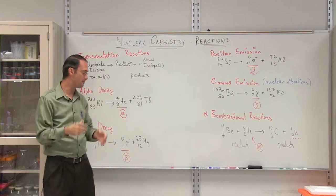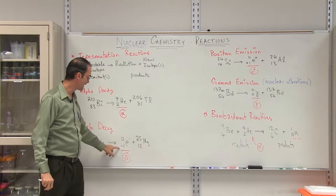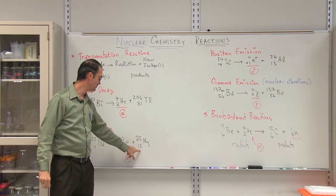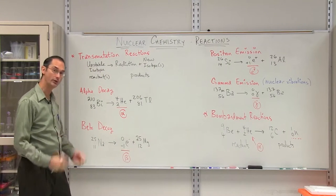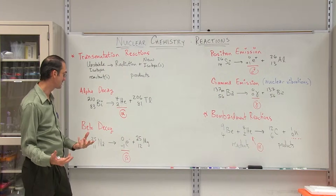Well, the charge of the nucleus has gone up by 1. So we have 11 minus a negative 1 is going to give us 12. So the new nucleus is going to be magnesium and we know the chemical properties of the product immediately.